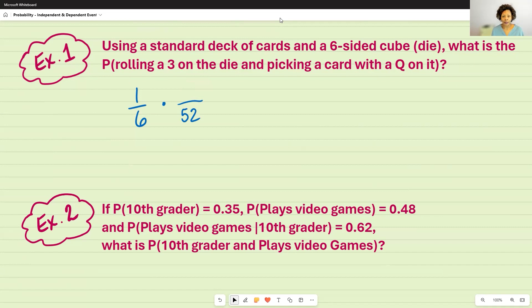Well, Q represents a queen. So you have a queen of spades, queen of clubs, queen of diamonds, and a queen of hearts. So a total of four. When we are multiplying fractions, we want to multiply the numerators together and the denominators together.